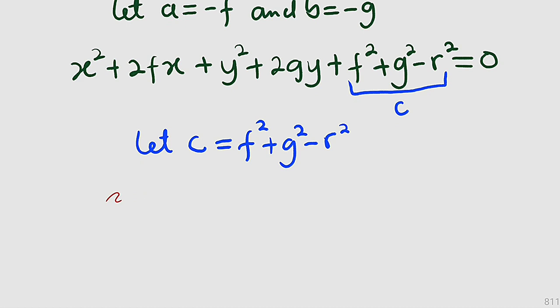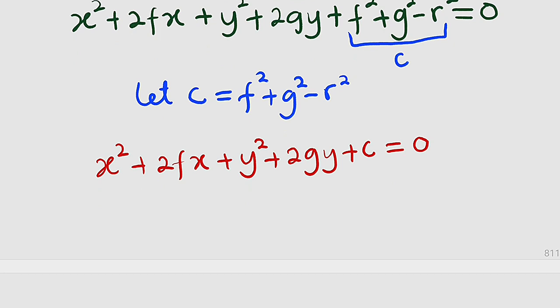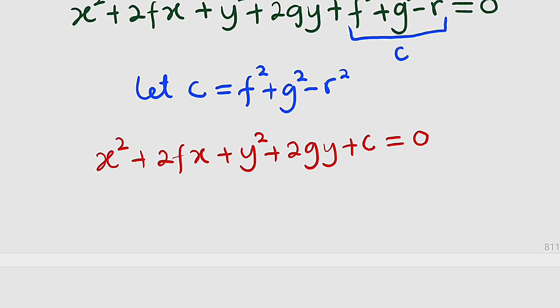So finally we have our equation in general form to be x squared plus 2fx plus y squared plus 2gy then plus c. The whole of this equal to zero. So now we have just expressed our equation from standard form to general form which is this.